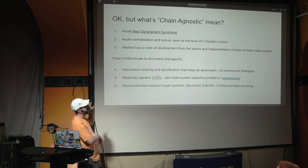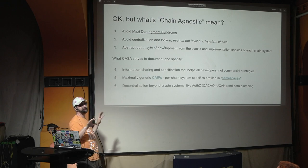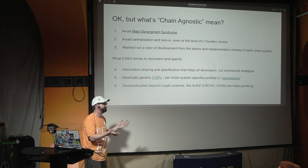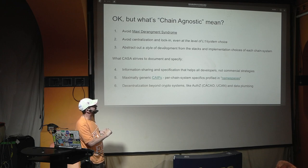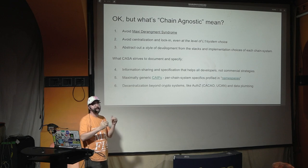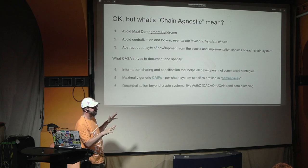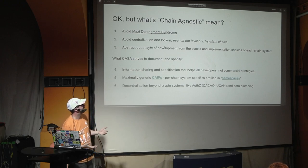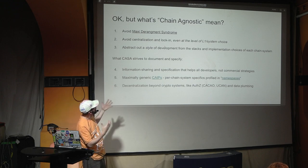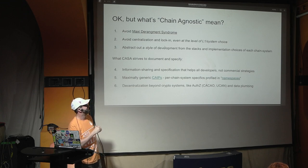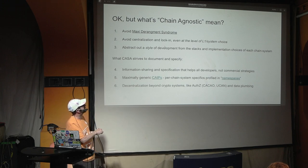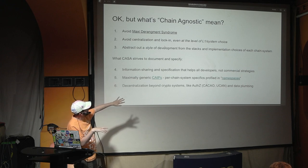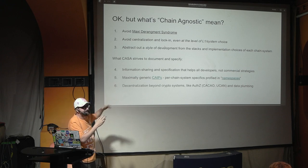We're trying to abstract Web3 development from specific blockchain system development. Most people learn one blockchain system first, and we're very early in having a chain-agnostic understanding of how these systems work. One of the goals of the Chain Agnostic Standards is to differentiate what's cool about Ethereum from what's cool about blockchain in general — finding a Web3 style of engineering and architecture. We write specs and specifications to help all developers, as a public option, designed in public.